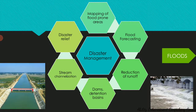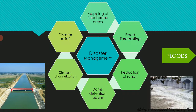In flood-prone areas, preventive measures can be put in place before the monsoon season. Flood forecasting involves disseminating prior information about the likely occurrence of floods so that people can be evacuated before floods actually hit. Reduction of run-offs can be done by reforestation, construction of dams, and construction of detention basins so that flood water volume doesn't peak and flow downstream can be controlled.